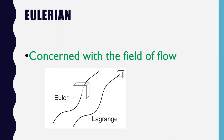In the Eulerian method, we compute the pressure field P of the flow pattern, not the pressure changes P of T that a particle experiences as it moves through the field.